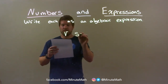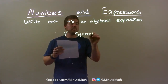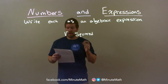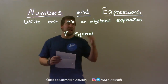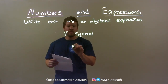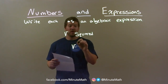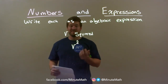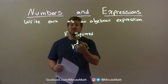V squared. Well, I have v squared. I want to write that as an algebraic expression. So I start with the letter v, and then to square it, put a little exponent up top with 2. And there we have it — v squared.